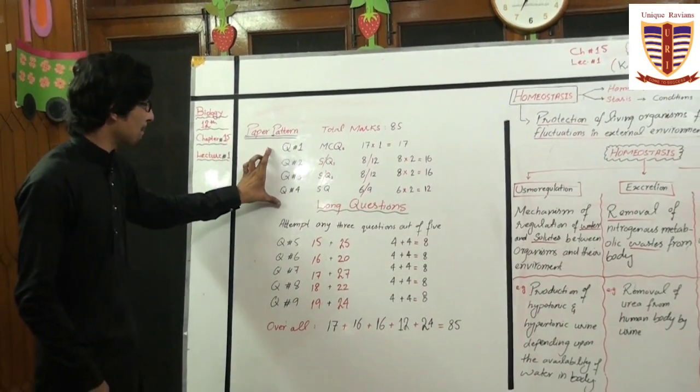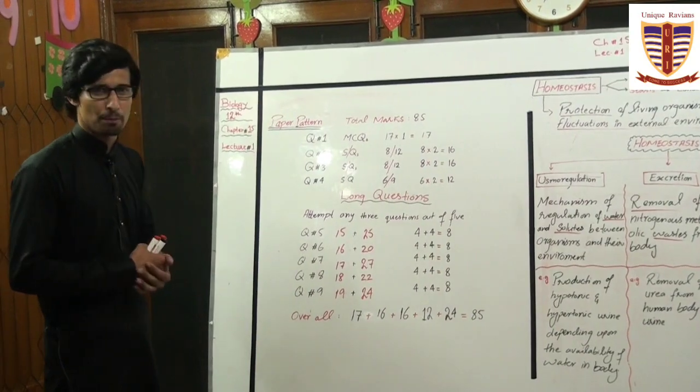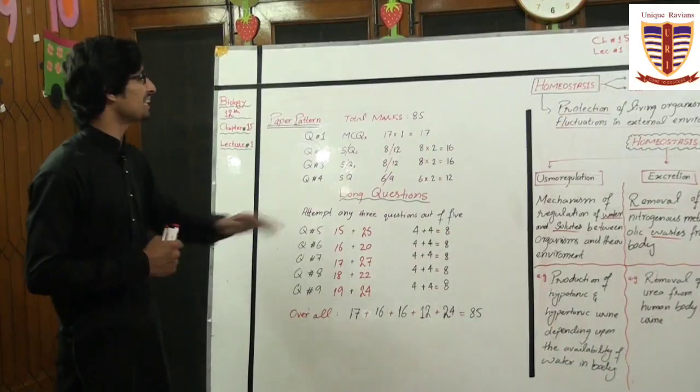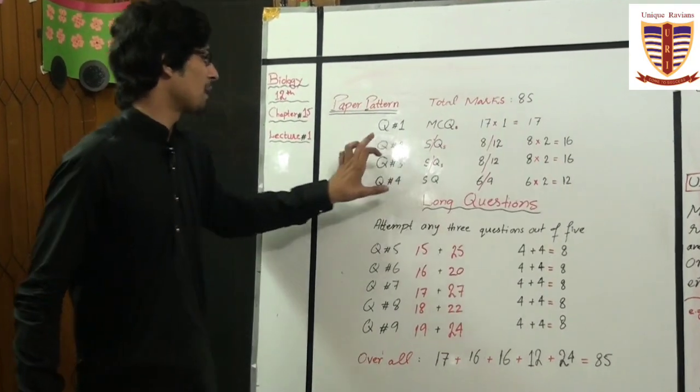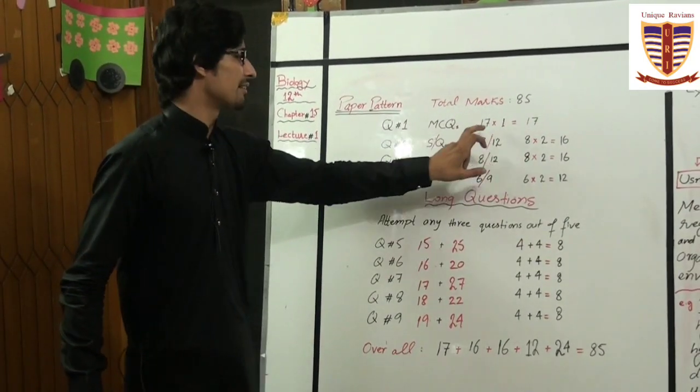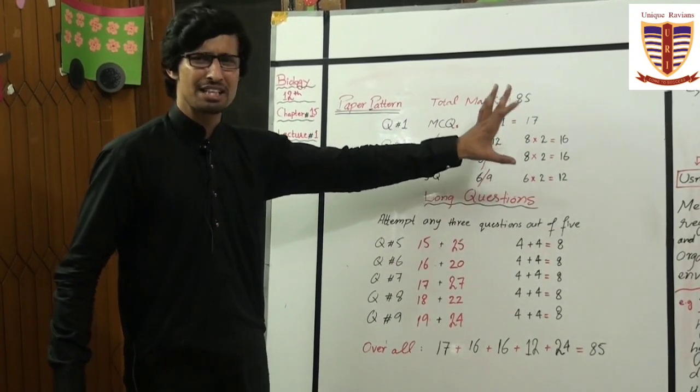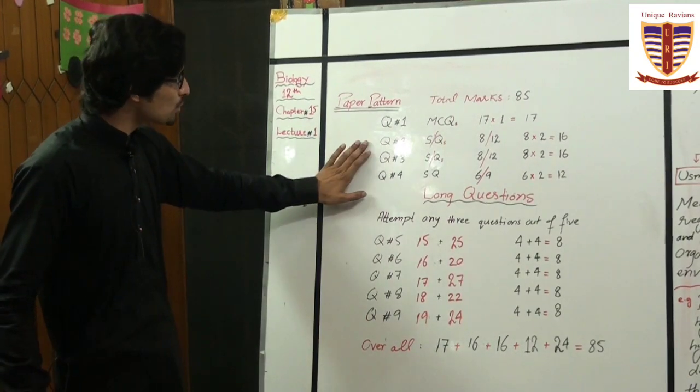The paper pattern, as you already know, consists of total 85 marks for the theory paper. Question number 1 consists of 17 MCQs, and 17 multiplied by 1 is equal to 17 marks for your first question. Then question number 2, question number 3, and question number 4.